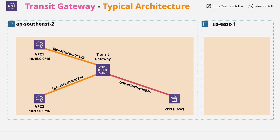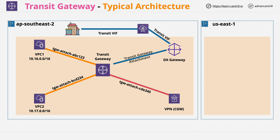It can also integrate with Direct Connect indirectly. To do this, a Transit VIF is created rather than a private VIF on a Direct Connect. This goes via a DX gateway, and this DX gateway can attach to the Transit Gateway. One DX gateway can be attached to three Transit Gateways in this way, and provide the DX connection access to all of the things connected to all of those Transit Gateways — potentially many, many VPCs.